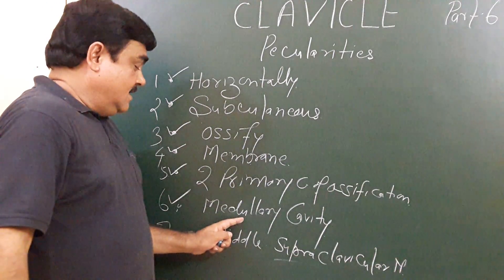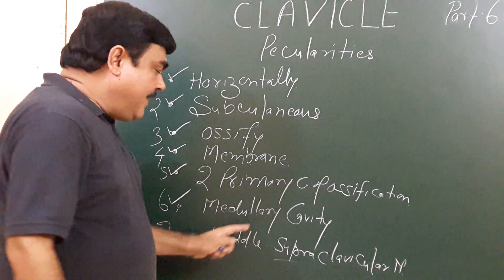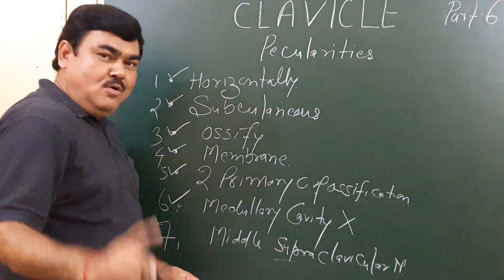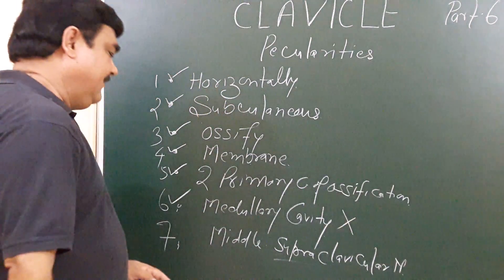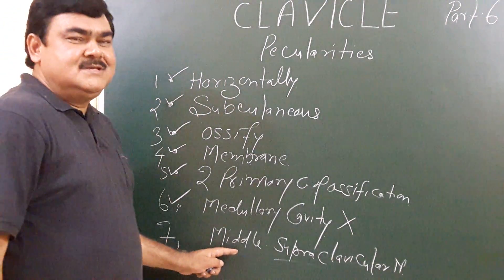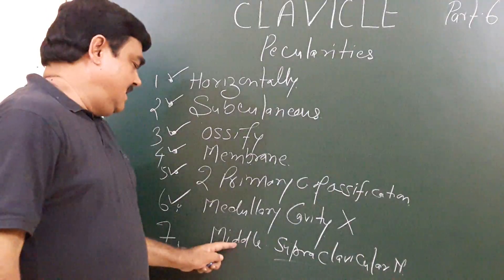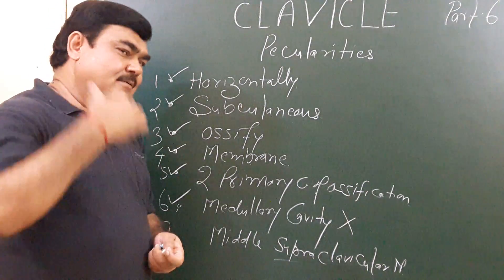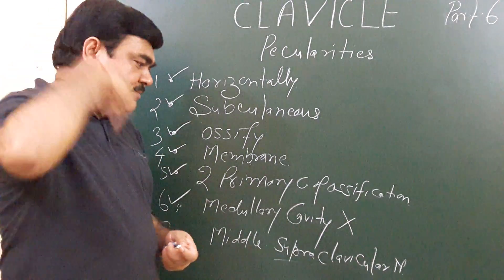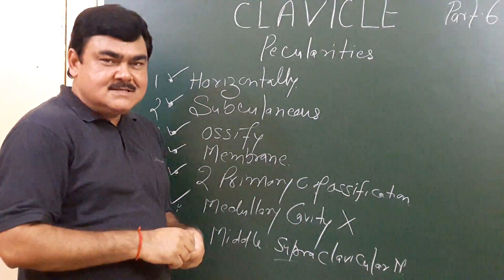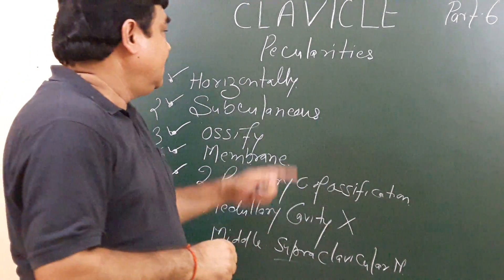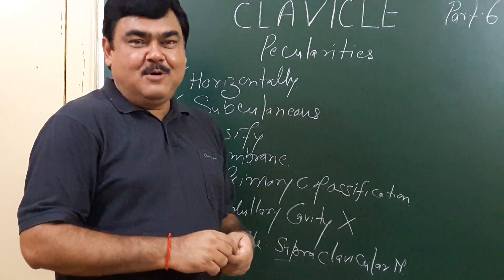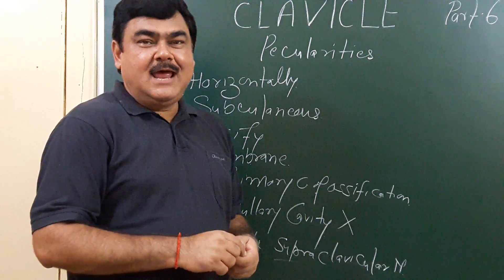This long bone has no medullary cavity. Also, occasionally the middle supraclavicular nerve pierces the clavicle. So this is all about the peculiarities of the clavicle.